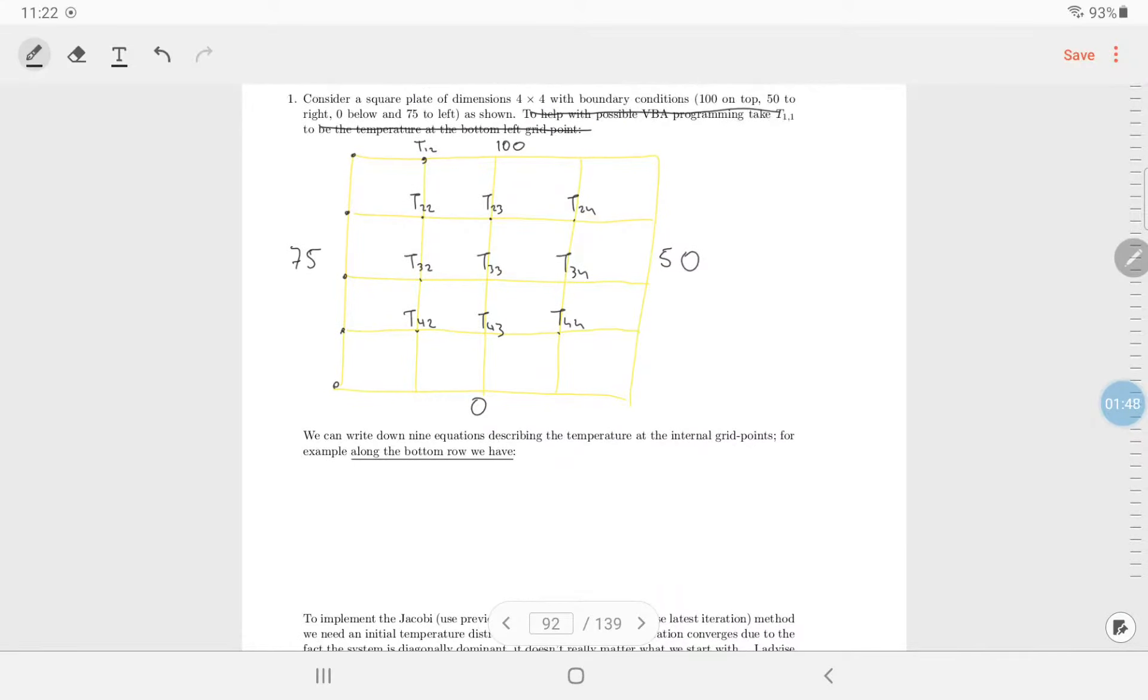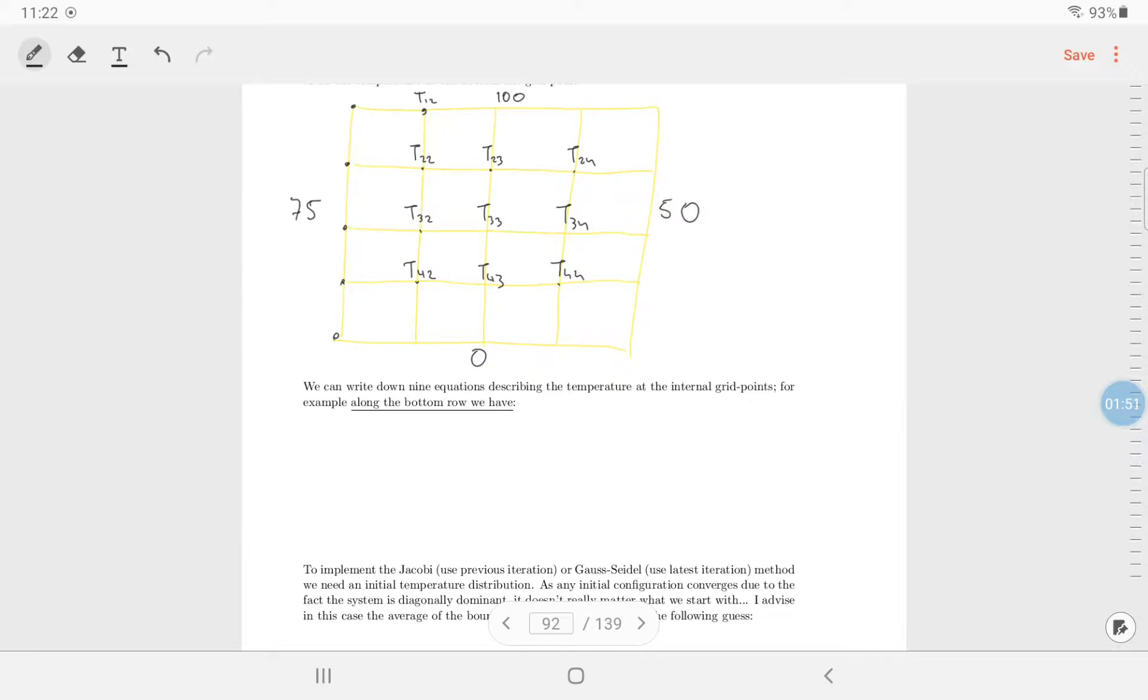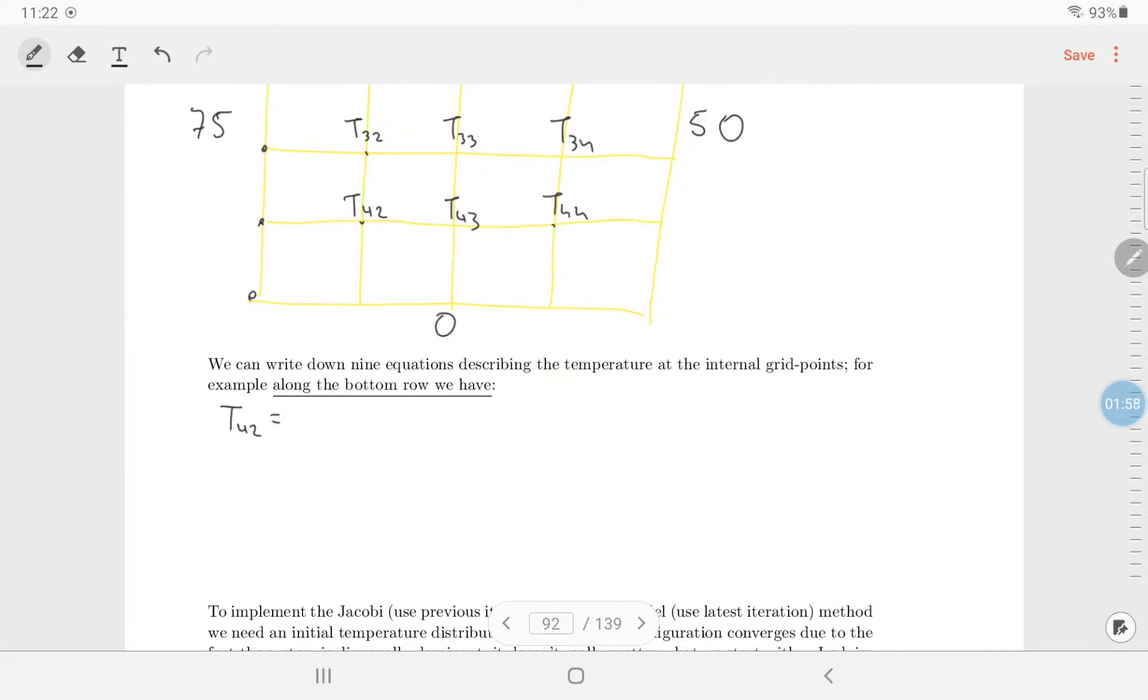So you can write down nine equations. I'm not going to write down all of them. I'll just write down along the bottom row. So temperature T42 is equal to the average of the four adjacents. I see T32 on top, T43 beside it, plus zero, plus 75, all divided by four.